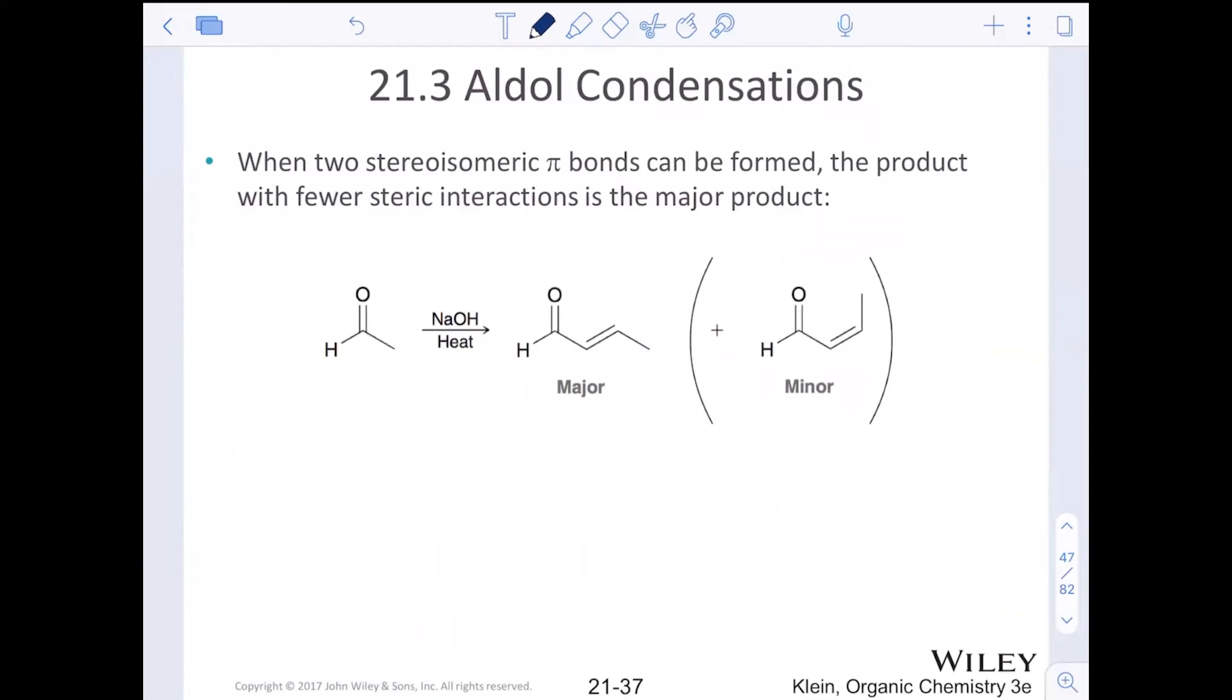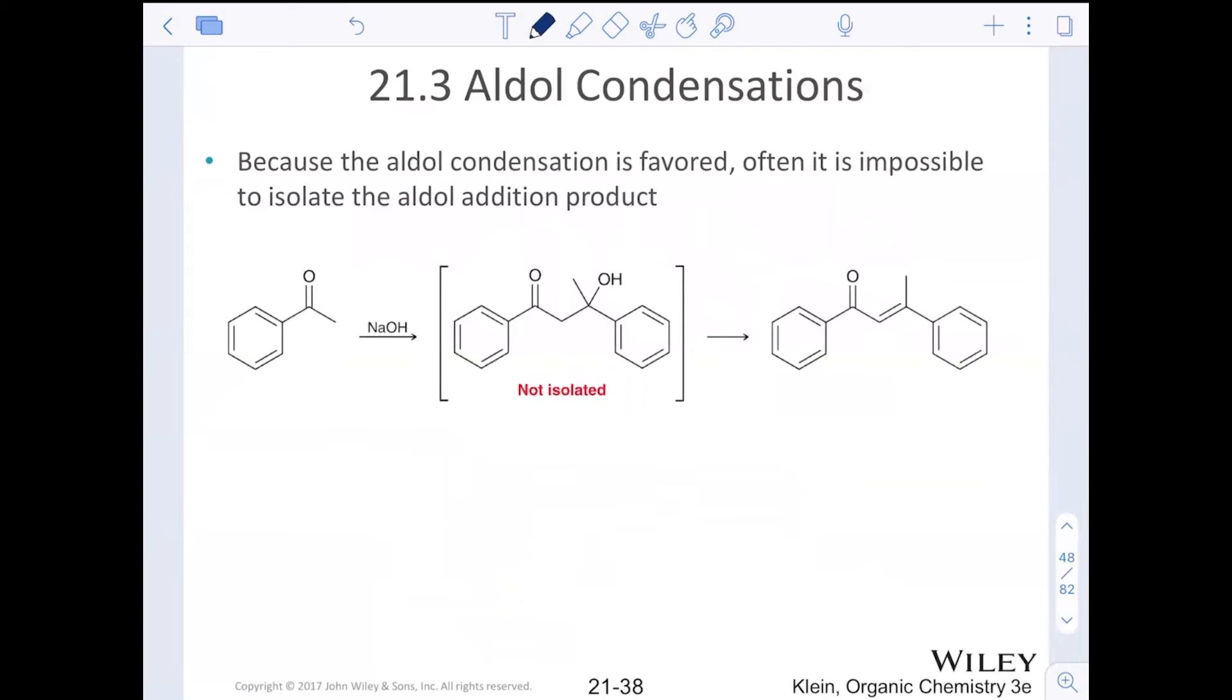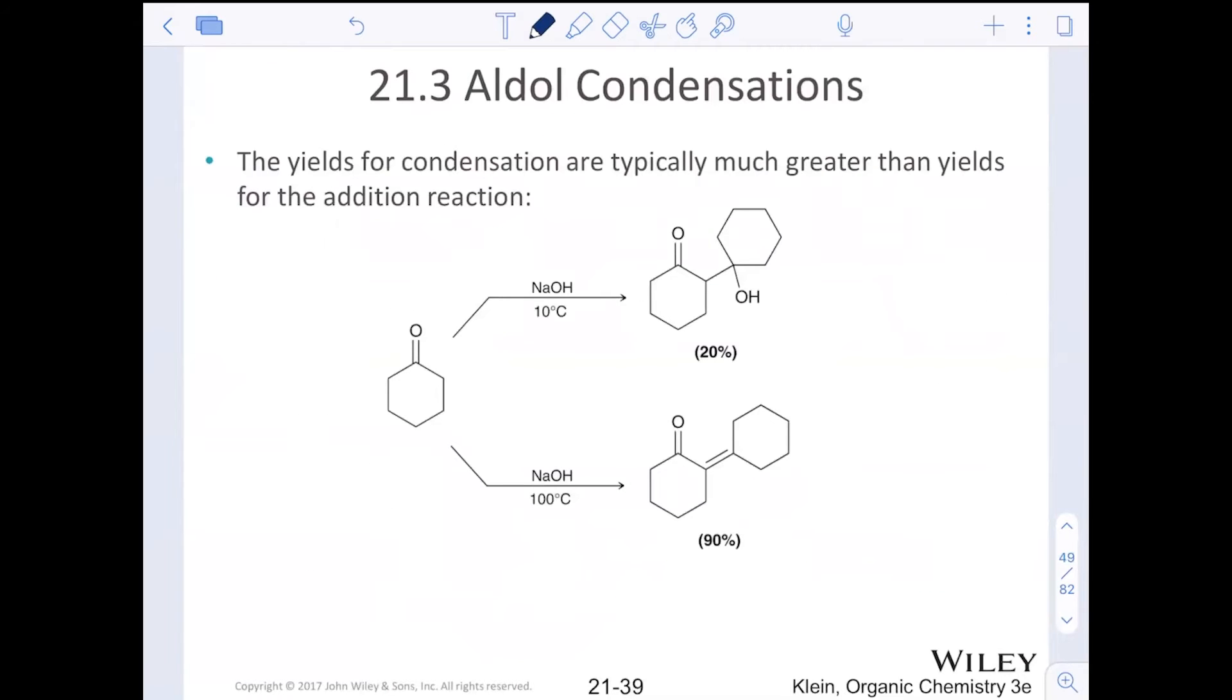When cis and trans or E and Z is formed, typically we will only show the major product, which is the trans form or E stereochemistry. Because the aldol condensation is favored, it's often impossible to isolate the aldol addition product.